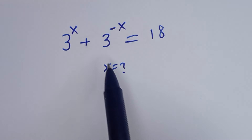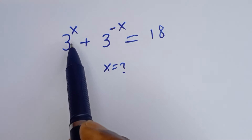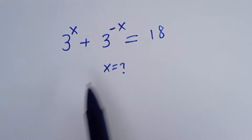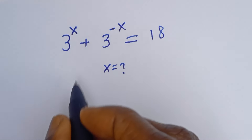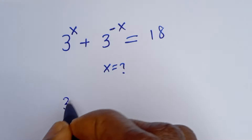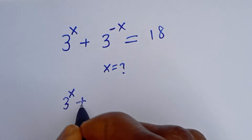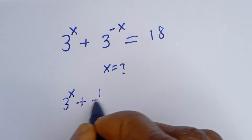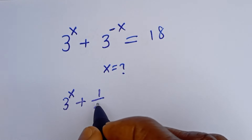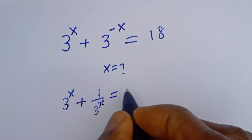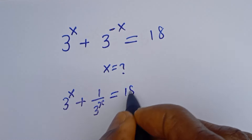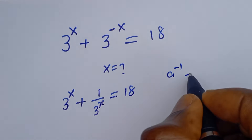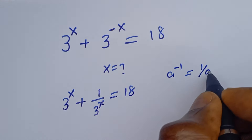Hello, how to solve for s in this equation: 3 to the power of s plus 3 to the power of minus s is equal to 18. Then we have 3 to the power of s plus 3 to the power of minus s, where 3 to the power of minus s can be written as 1 over 3 to the power of s, because a to the power of minus 1 is equal to 1 over a.